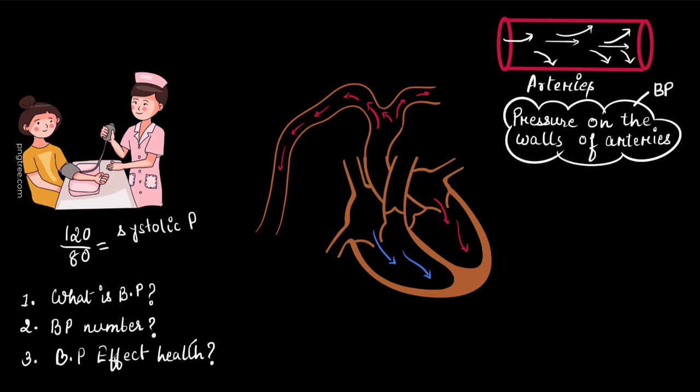But when the heart is not pumping or during diastole or we also call it the time between two heartbeats, the pressure in the arteries then is less. So, the number or the denominator here is the diastolic pressure. So, here we learned that we have two separate numbers because one is the systolic or the pumping pressure and the other is the diastolic or the resting pressure.